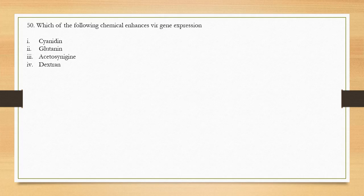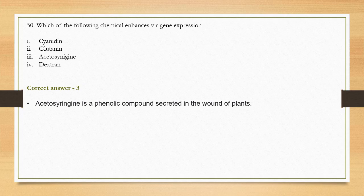Question number 50: Which of the following chemicals enhances virulence gene expression? Options are cyanogene, glutenin, acetosyringone, and dextrin. The correct answer is option 3, acetosyringone. Acetosyringone is a phenolic compound secreted in the wounds of plants — you can notice a red fluid oozing from thick stem cuttings. This chemical enhances the expression of the virulence gene.